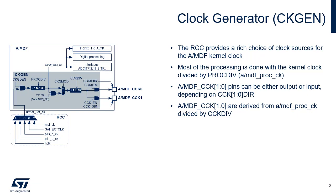RCC provides a rich choice of clock sources for the MDF and ADF kernel clocks. Note that the SAI-XCLK and PLL1-PCK sources are common to the SAI's kernel clocks. The clock frequency for MSI-K can be chosen from 16 frequencies. For their internal processing, MDF and ADF use a processing clock, which is obtained by dividing the kernel clock by the PROCDIV prescaler. This processing clock is used for the serial interfaces, the ADC interfaces, the trigger functions, the digital filters, the short-circuit detectors, and the out-of-limit detectors.